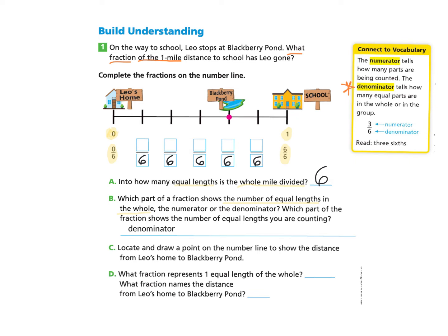Which part of the fraction shows the number of equal lengths you are counting? The numerator tells how many parts are being counted, so we answer numerator. We can fill in the numerators starting at 0 over 6, which is Leo's home. For each section of travel we put 1, 2, 3, 4, 5, and they've already filled in 6 over 6 at the school.